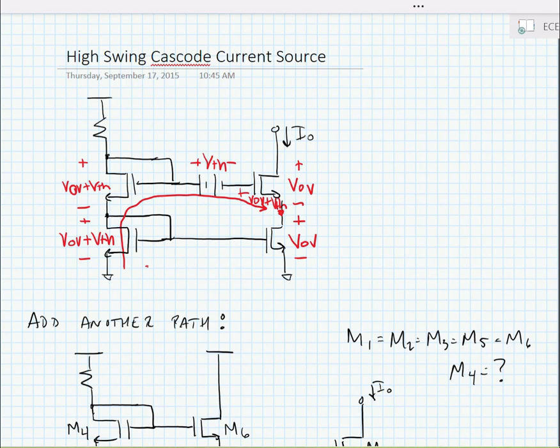...then if we summed all these voltages together, we would get back to this ideal requirement of having only one Vov across the bottom transistor and the output current stack.